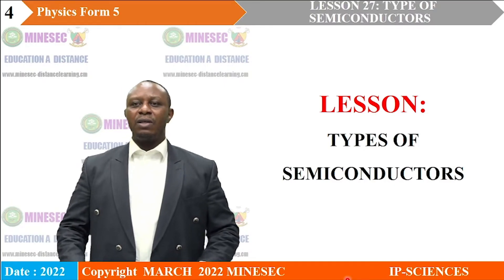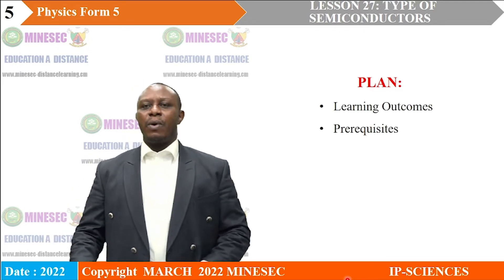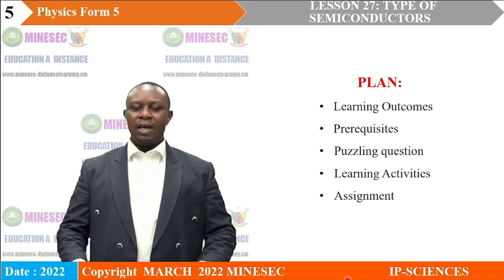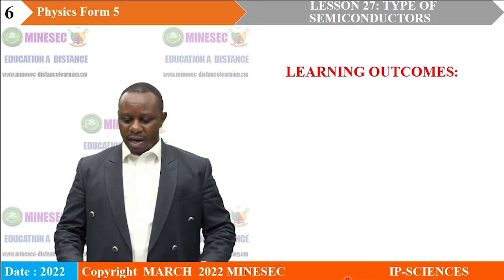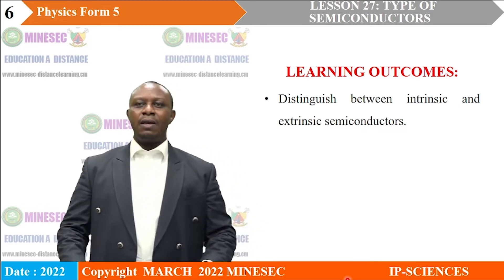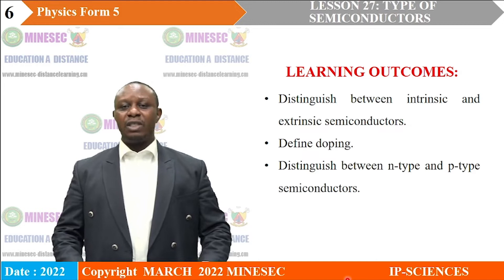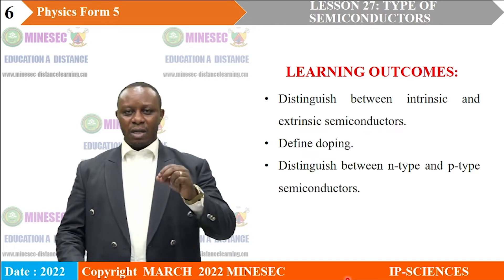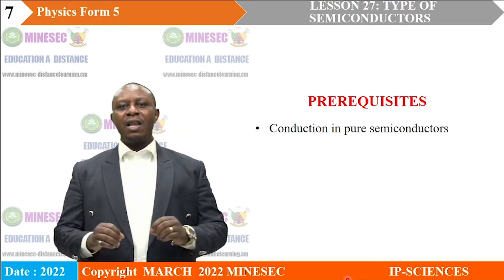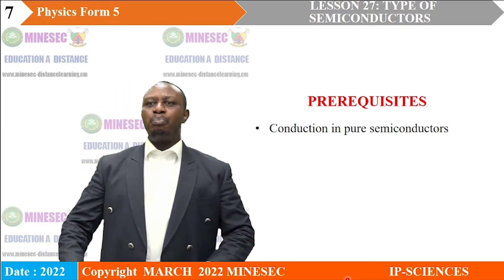Our lesson for today will be on semiconductors, specifically types of semiconductors. The lesson shall unfold with learning outcomes, prerequisites, puzzling questions, learning activities, and we will end with an assignment. By the end of this lesson, learners are expected to distinguish between intrinsic and extrinsic semiconductors, define doping, and distinguish between N-type and P-type semiconductors.